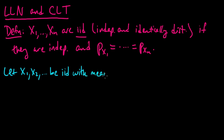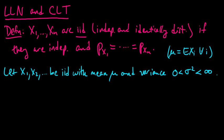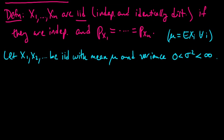We will let this sequence be iid with mean μ. Since they're identically distributed, the expected value of xi is the same for all i, so we call that μ. And variance σ². They all have the same variance as well, and we suppose that the variance is strictly positive and finite.